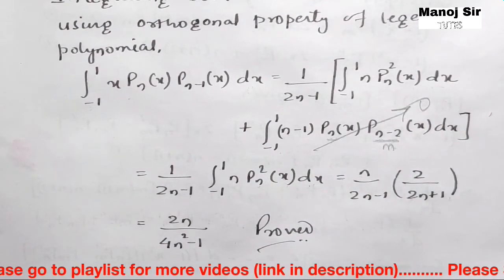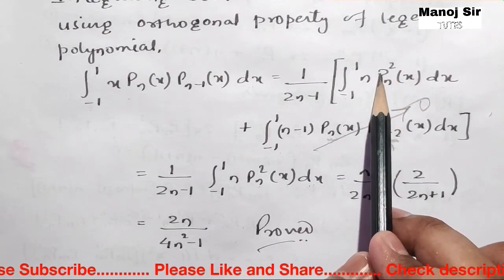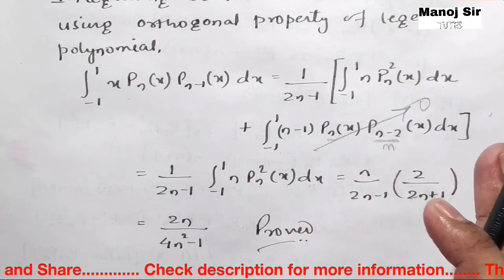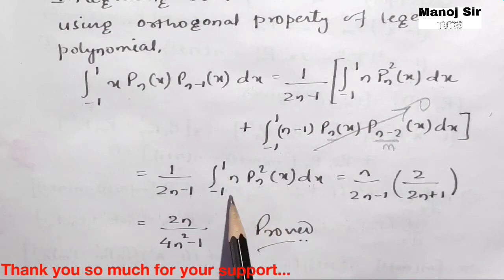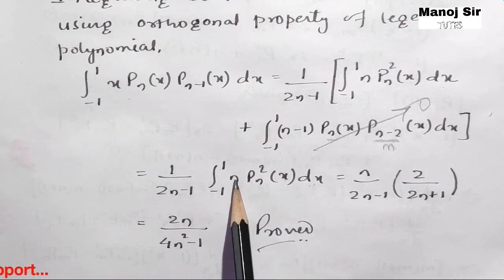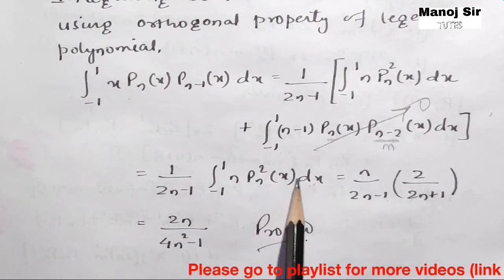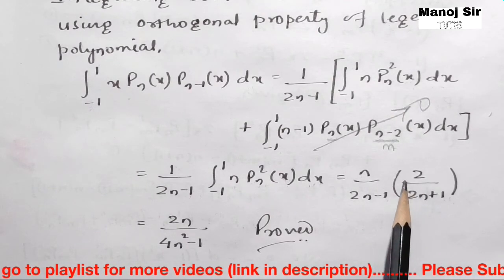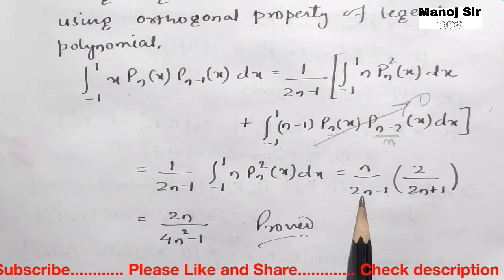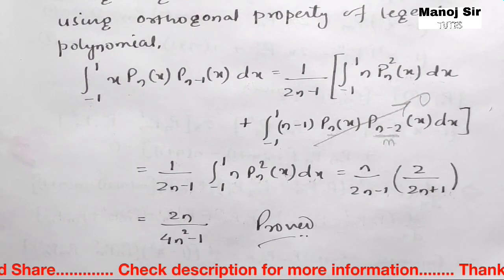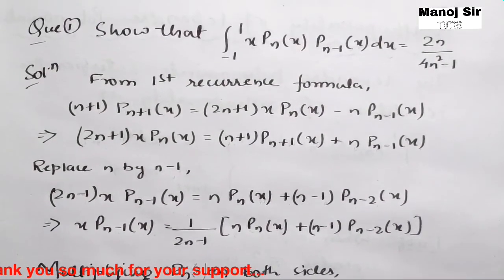So we only need to solve the first term: 1/(2n−1) · n · ∫₋₁¹ Pₙ²(x) dx. Since m = n here, the integral equals 2/(2n+1). This gives us n/(2n−1) · 2/(2n+1) = 2n / [(2n−1)(2n+1)]. Using the identity (a−b)(a+b) = a²−b², the denominator becomes 4n²−1, giving the result 2n/(4n²−1).